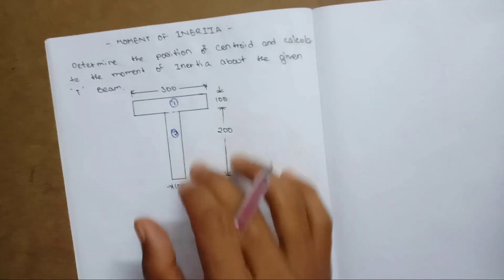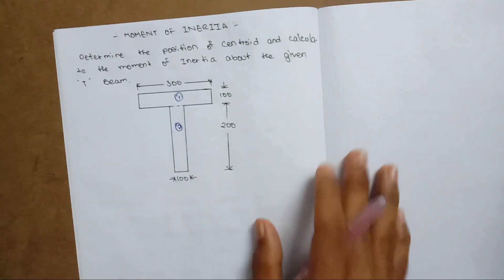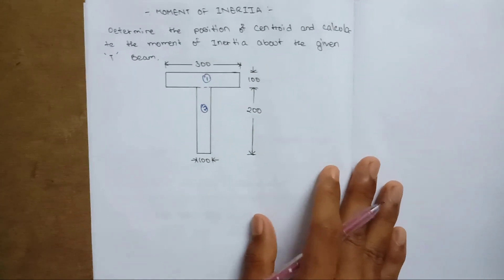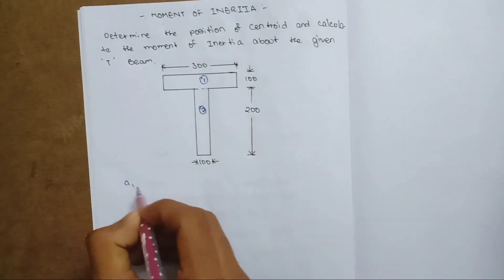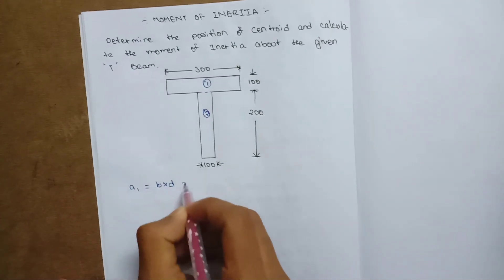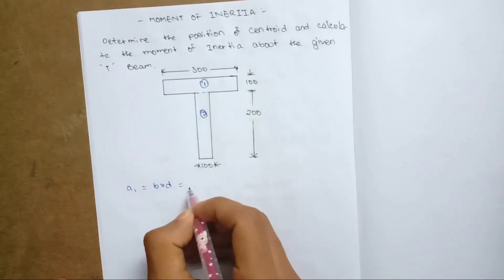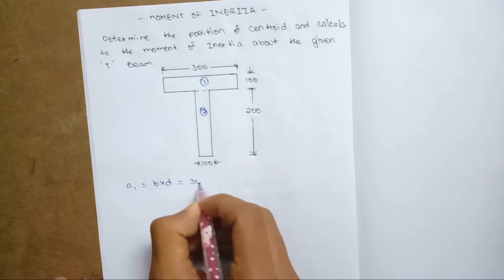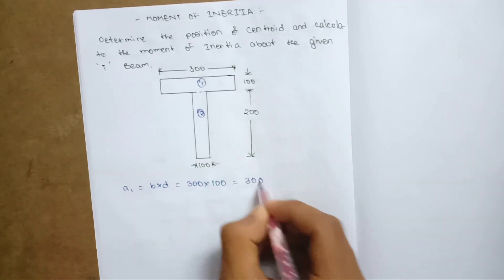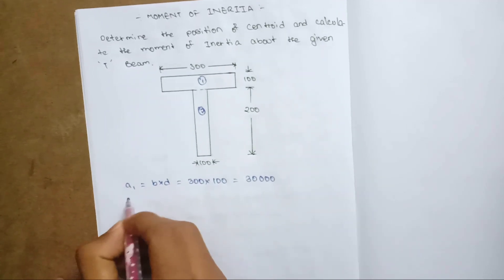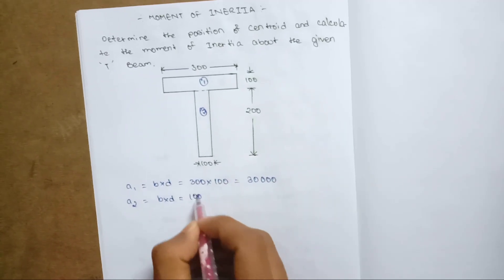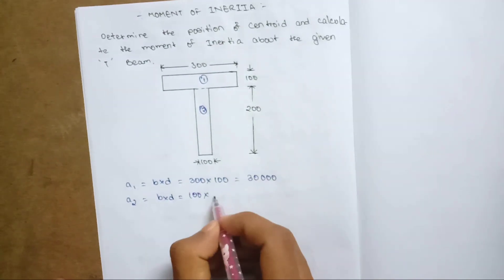Now, we are going to find the centroid of the two rectangles. We need to identify the centroid coordinates — x1, x2, y1, y2 — for each rectangle.